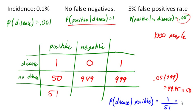So remarkably, even though this test has no false negatives, and only a 5% false positives rate, if you test positive for this disease, there's only a 2% chance that you actually have it.